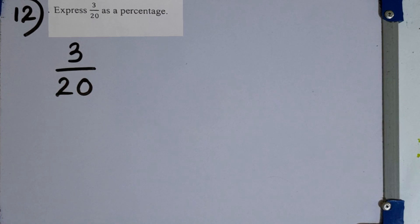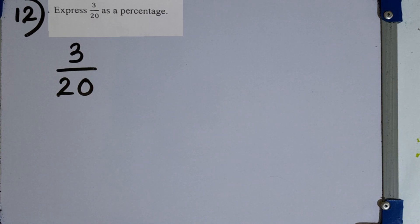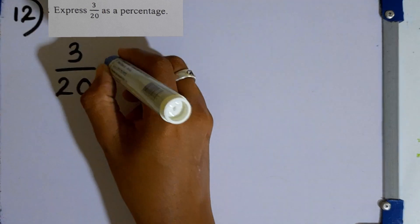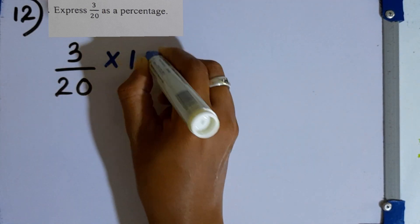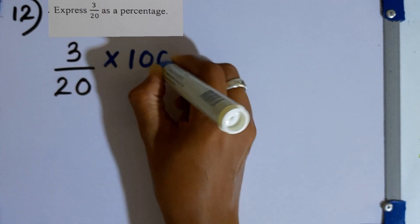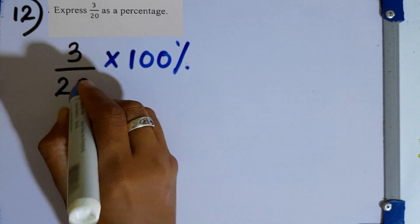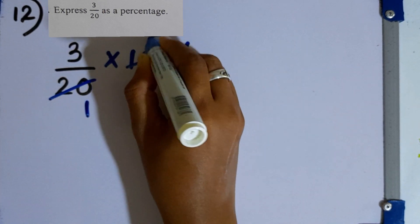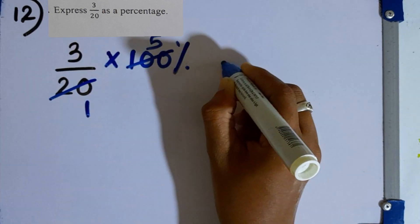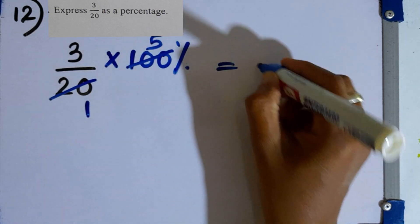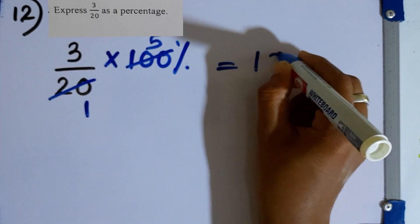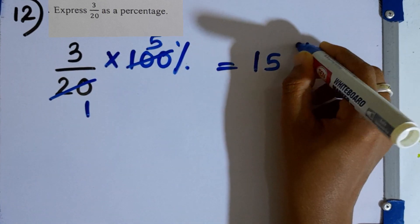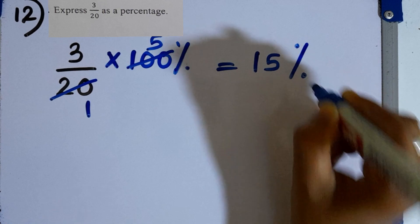Question number 12. Express 3 over 20 as a percentage. To convert to a percentage, multiply by 100%. 20 times 5 gives 100, so 3 times 5 is 15. The answer is 15%.